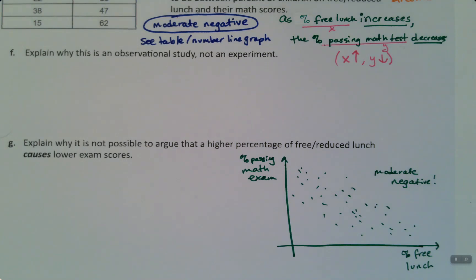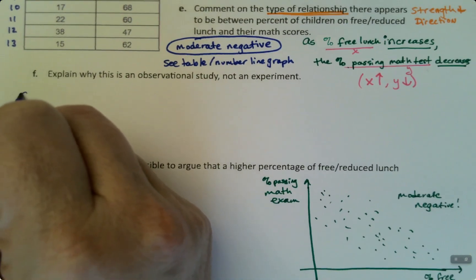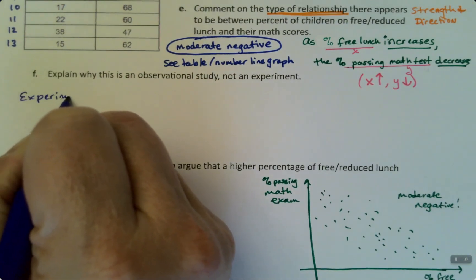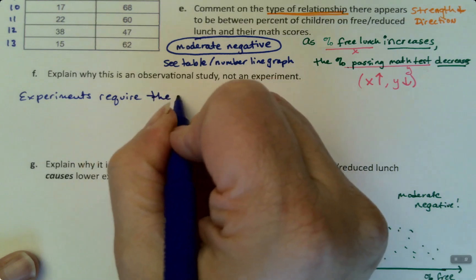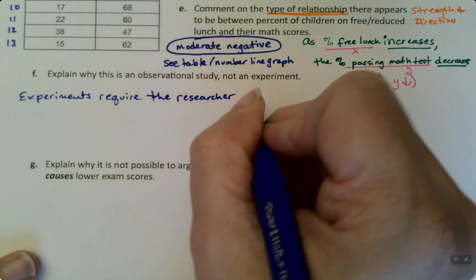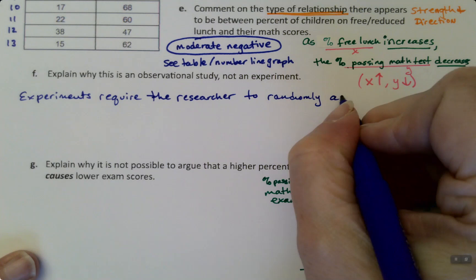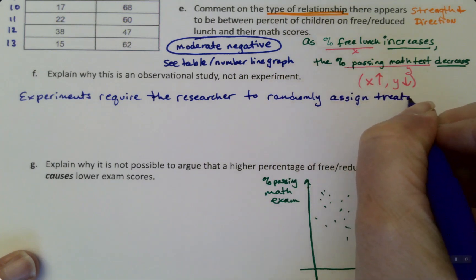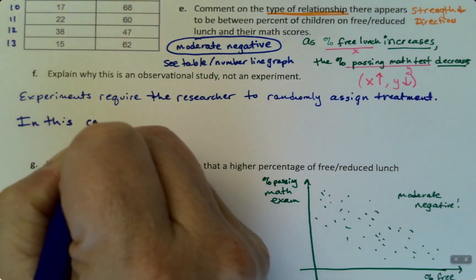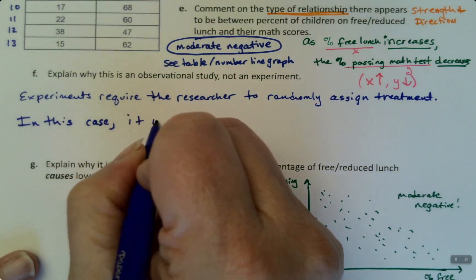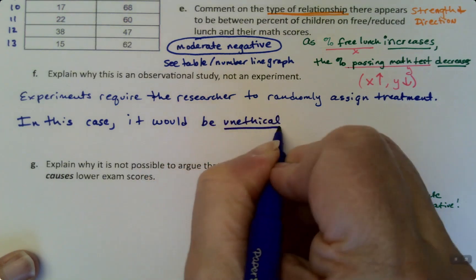Well, because experiments require the researcher to randomly assign treatment. In this case, that would have been free reduced lunch. In this case, it would be unethical by a large amount to randomly assign free lunch.